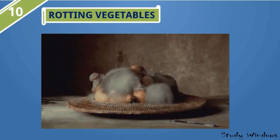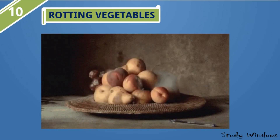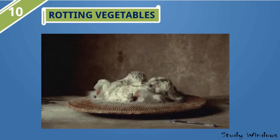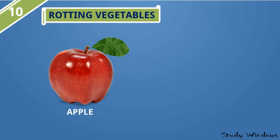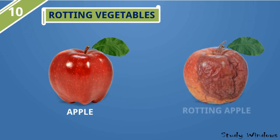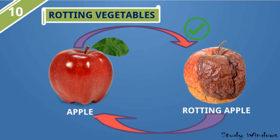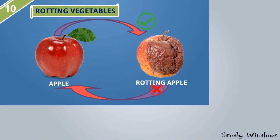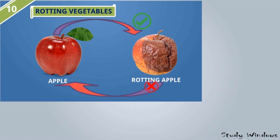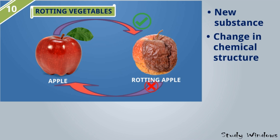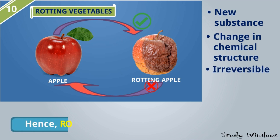Rotting vegetables. If you keep some vegetables in an open area, after some days you cannot eat them. Take an apple and keep it in air for a few days — day by day it will be affected by fungi and it will become a rotting apple. This normal fresh apple changes into a rotting apple, but we cannot get the normal fresh apple back from the rotting apple. Due to fungi, the natural apple changes into a rotting apple. There is a new substance formed, change in chemical structure, and it is irreversible. Hence rotting apple is a chemical change.